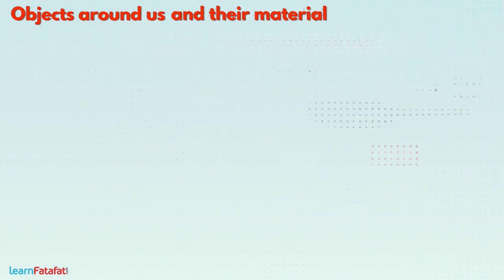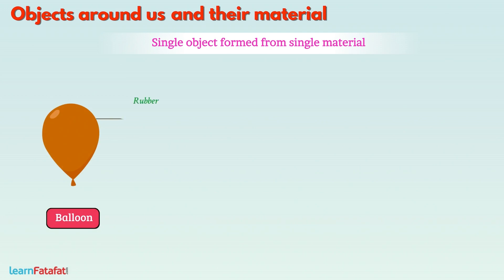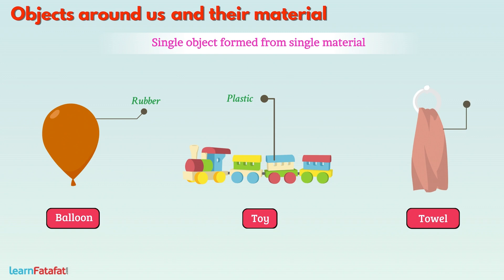However, a single object can also be formed from a single material. For example, a balloon is made of rubber, a toy is made of plastic, and a towel is made of cotton.